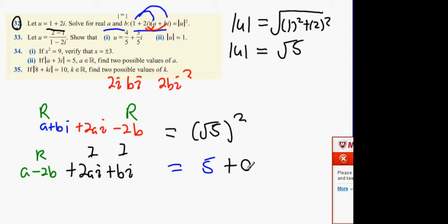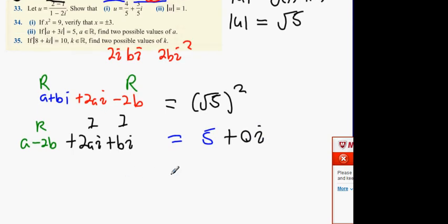So that means it's 0i. This means that the imaginary equation is 2a plus b, and that has to equal 0 because it doesn't exist. The next one's going to be a minus 2b, and that has to equal 5, because the real on the left equals the real on the right.